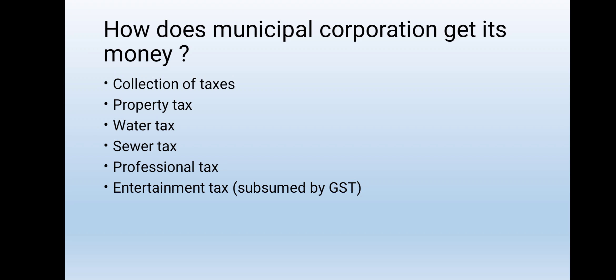Providing and running so many services requires a lot of money. The municipal corporation collects this in several ways. A tax is the sum of money that people pay to the government for the services it provides. People who own homes have to pay a property tax as well as taxes for water and other services — the larger the house, the more the tax. Property tax, however, forms only 25 to 30 percent of the money that a municipal corporation earns.